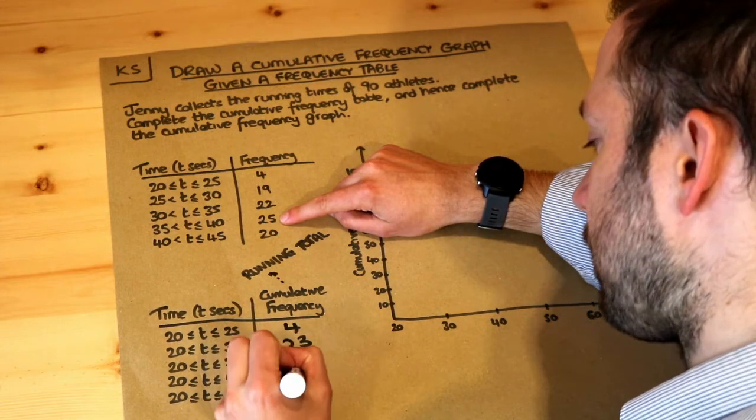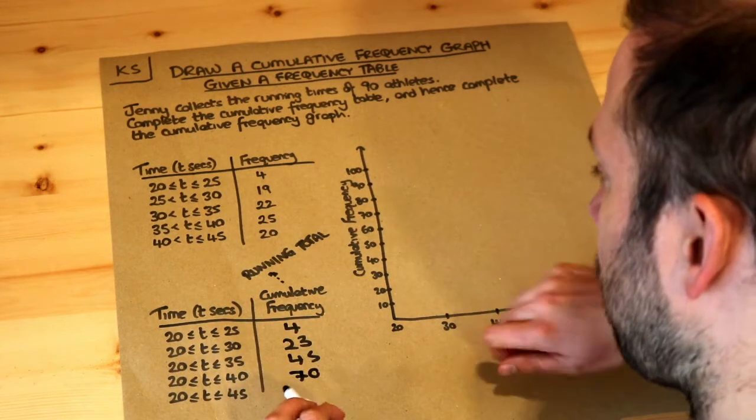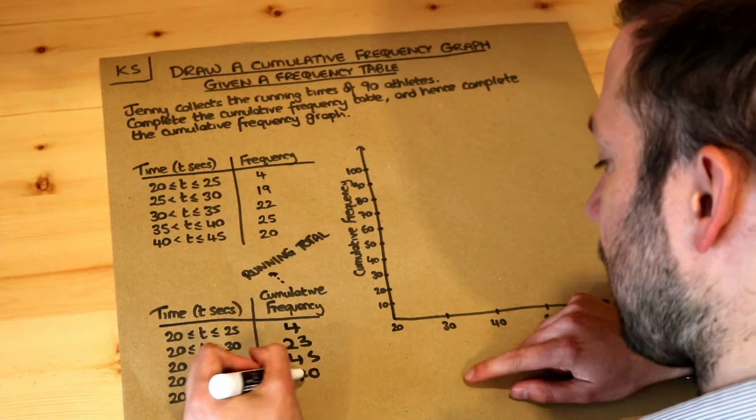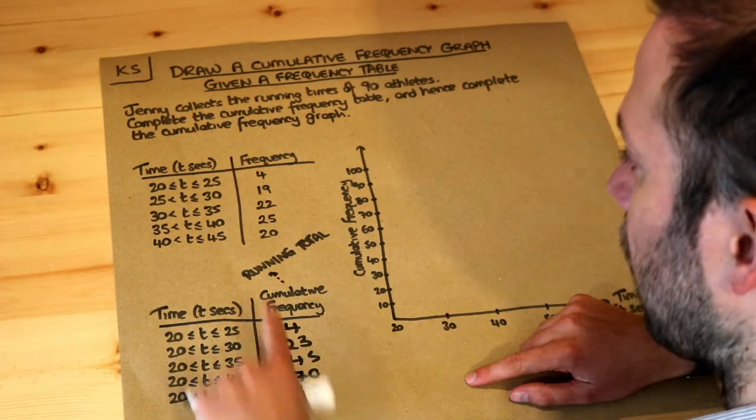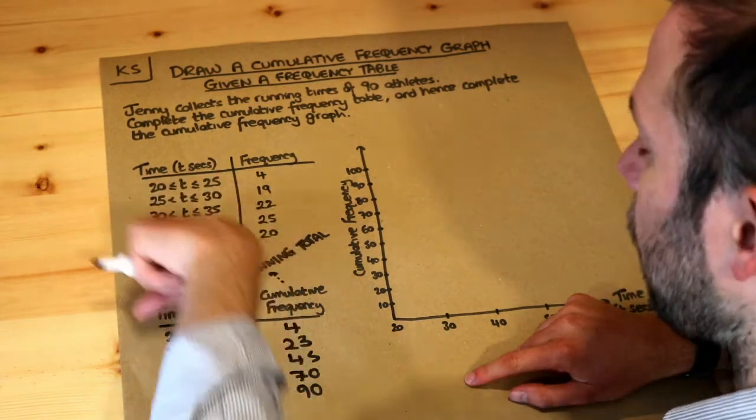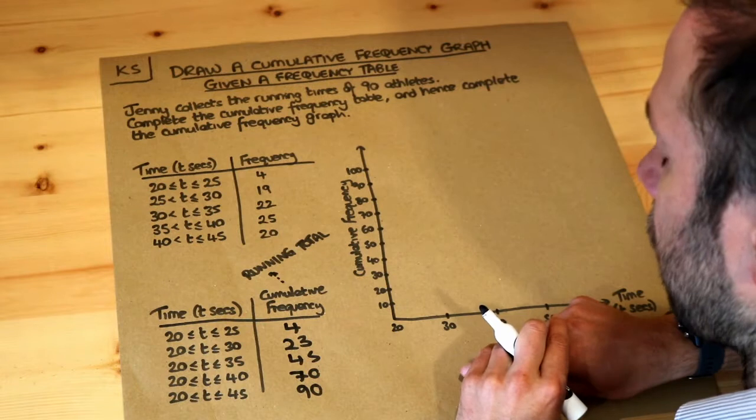That's 70 and then finally we've got another 20 athletes that gets us up to the 90 athletes in total. And look at this range, we've got 20 to 45, 20 to 45 is the full spread of your frequency table here.